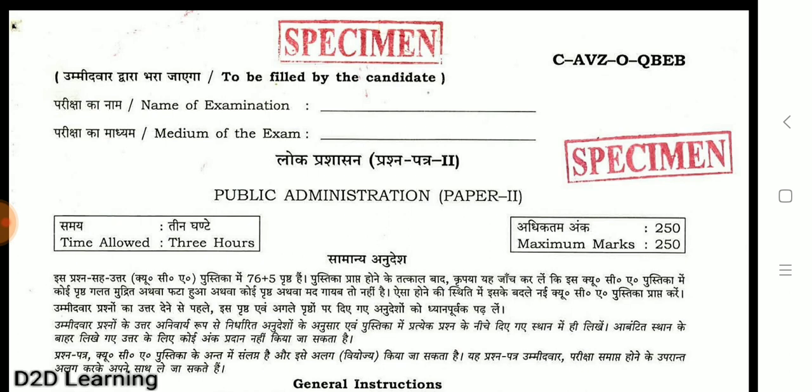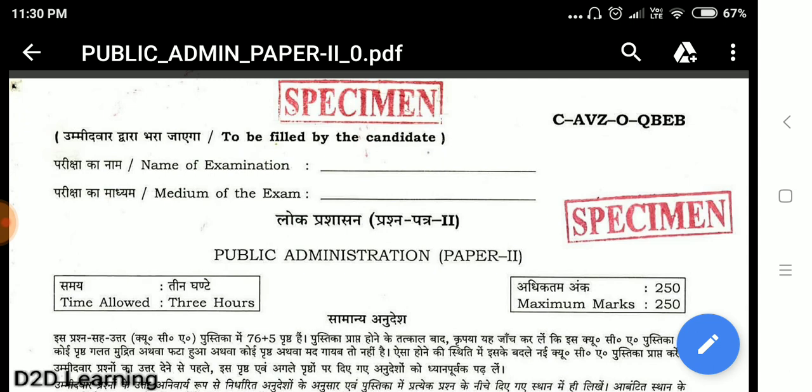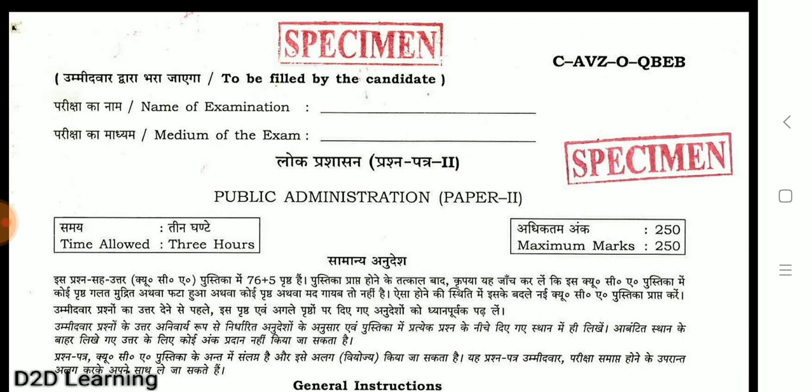So now we will see how to look at the optional question-cum-answer booklet. If you have any options, this is definitely useful because it is very common. If you have to download it from the UPSC site, you will find all the links in the description.